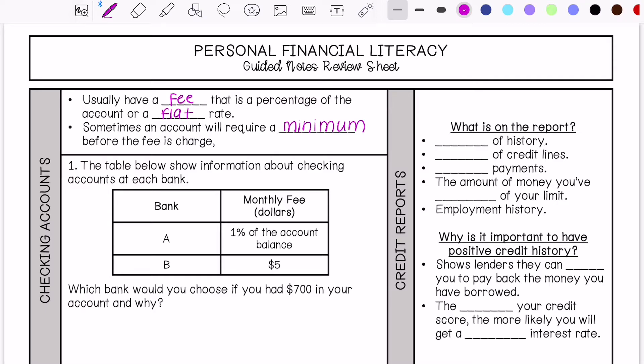We are going to look at these two banks and their different checking accounts. We are going to try to figure out which bank we would choose. The table below shows information about the checking accounts at each bank. We have Bank A which has a monthly fee of 1% of the account's balance. Then Bank B's fee is just a flat $5 rate. Which bank would you choose if you had $700 in your bank account?